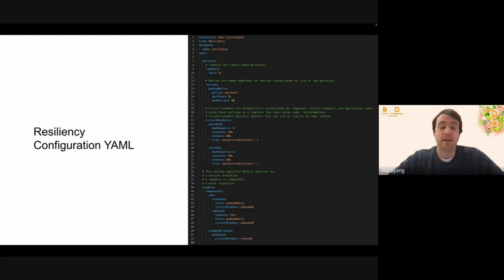So here's the resiliency as a whole. What it is inside of Dapper is a YAML. If you're running standalone or a CRD, but that's also a YAML. But it's basically a piece of configuration that allows you to set up several different policies across a series of targets in your application.